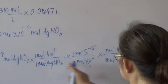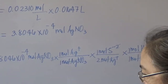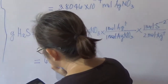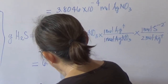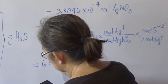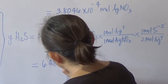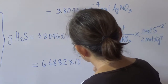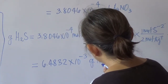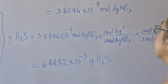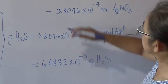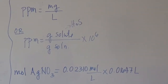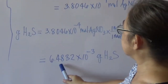Dividing by 2, we get 6.4832 × 10⁻³ grams of hydrogen sulfide. We already have the amount of the solute — grams of solute — which is 0.00648 grams.